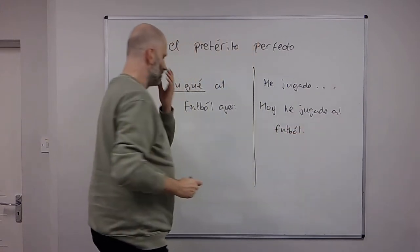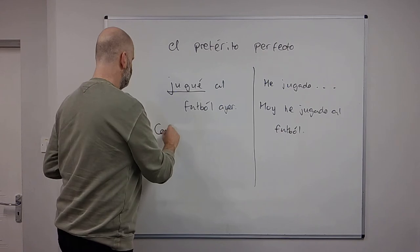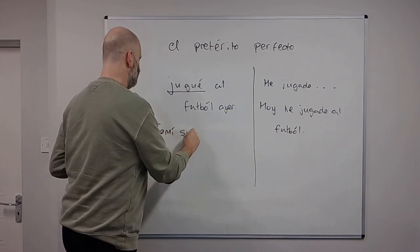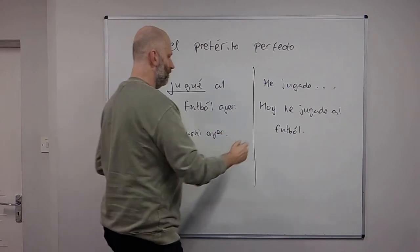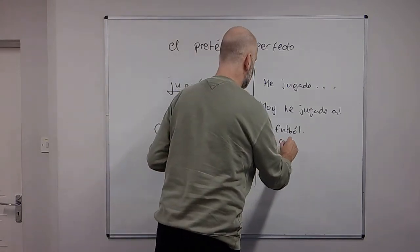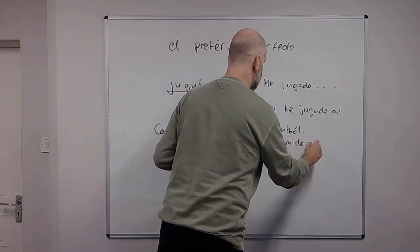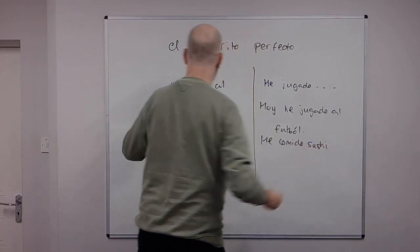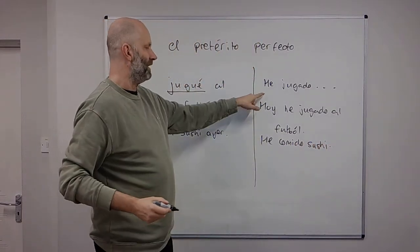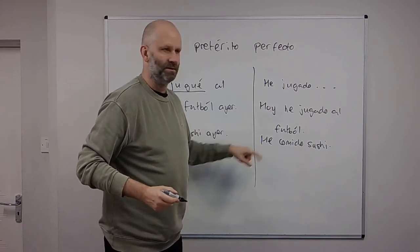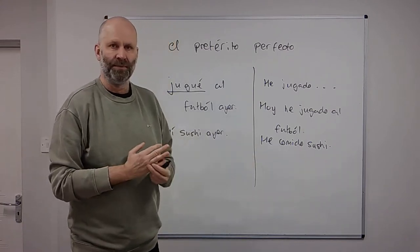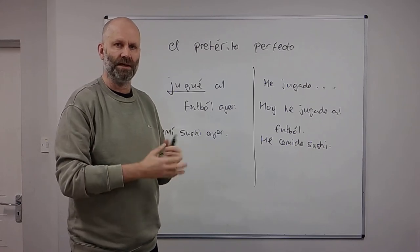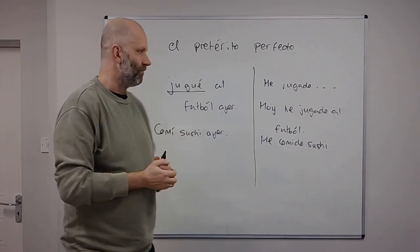You can also say something like comí sushi ayer, or he comido sushi. So you can see I've played and I played, I ate and I've eaten. So the present perfect in Spanish is very similar to present perfect in English, not exactly but more or less.